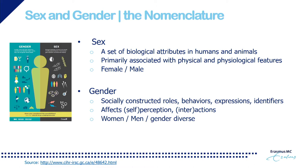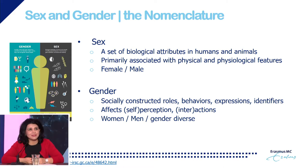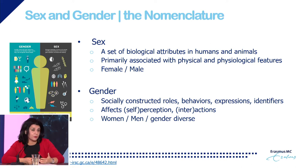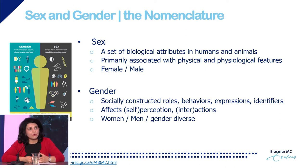A couple of words on the nomenclature. Sex and gender are often used interchangeably, but there are differences between the two. Sex is a set of biological attributes in humans and animals and is primarily associated with physical and physiological features, including chromosomes, hormonal expressions, hormonal levels, and sexual and reproductive anatomy. Sex is often categorized as male and female, but we need to appreciate that there is a large variation in the continuum of biological attributes and the way they are expressed.